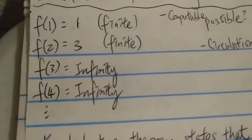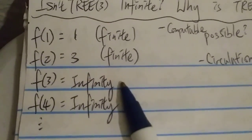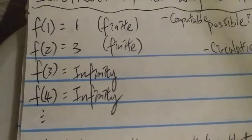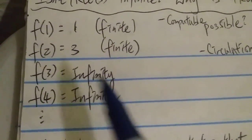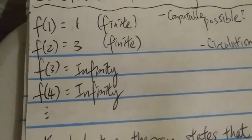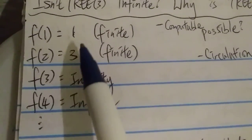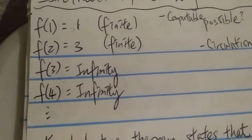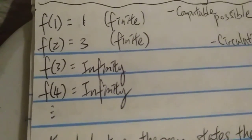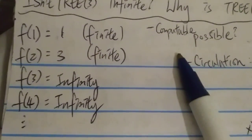Is such a function possible, especially if it's a computable function? If it's an uncomputable function, this is definitely possible, because uncomputable means there's no algorithm to calculate or output it — you can simply define each individual input and output yourself. So you can define f(1)=1, f(2)=3, f(3)=infinity, f(4)=infinity, and even f(5) as a finite number, say 5, then f(6) goes back to infinity. You can define whatever you want — that would be an uncomputable function.